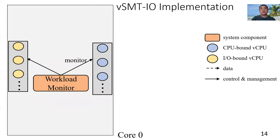We have implemented a prototype of vSMTIO based on Linux and KVM. vSMTIO incorporates four major components, shown in orange in this figure. On each core, the workload monitor component periodically monitors workloads running on VCPUs and provides workload information, such as context retention rates, to other components.